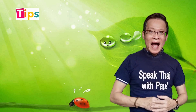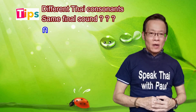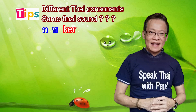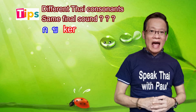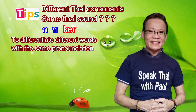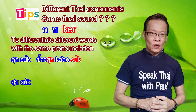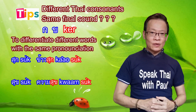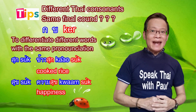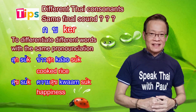Tips for you: Do you know why there are different Thai consonants having the same final sound? For example, kor kai and another kor consonant have the same final sound K. That is because Thai language uses different consonants with the same final sound to differentiate words with the same pronunciation. For example, 'suk' in 'khao suk' has the same pronunciation as 'suk' in 'khwam suk,' but they mean different things — to cook rice versus happiness.